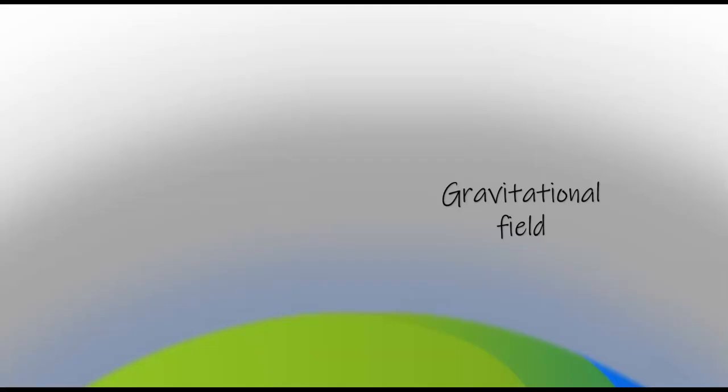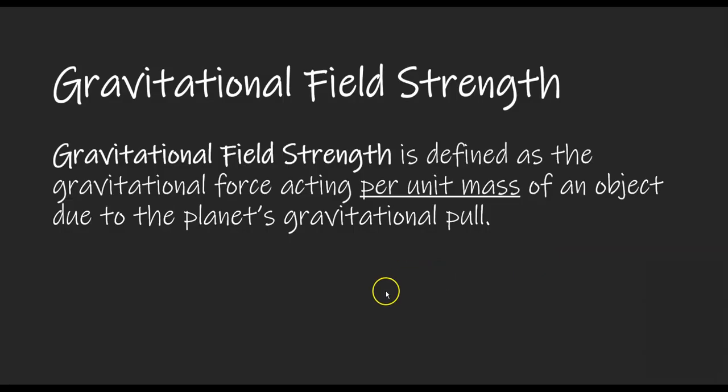When an object is within a gravitational field, how much force does that planet exert in pulling that object towards the center of the planet tells us the strength of that gravitational field. Therefore, the gravitational field strength of a planet is defined as the amount of gravitational force that that planet exerts in pulling a unit mass of an object. And unit mass means one kilogram of the object.